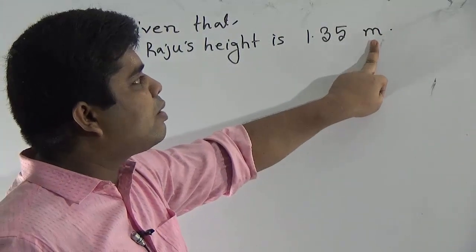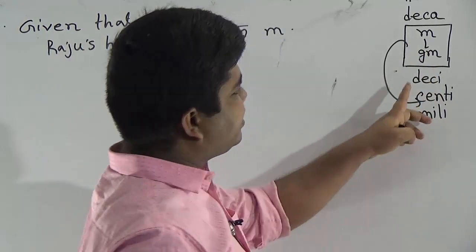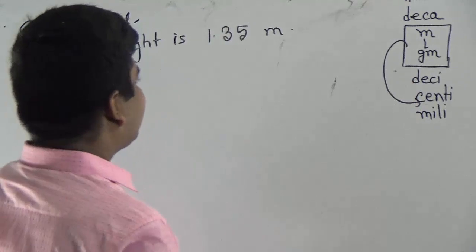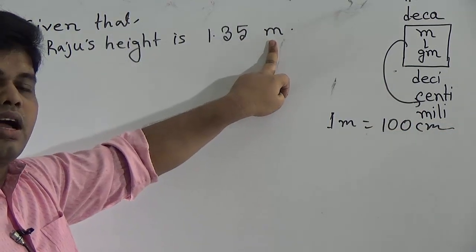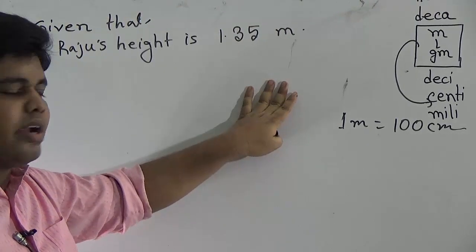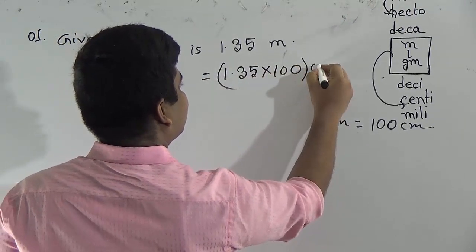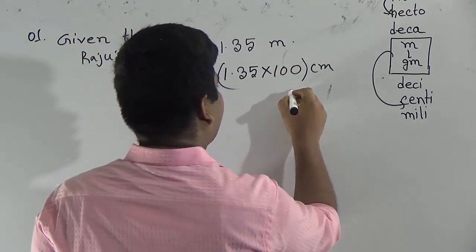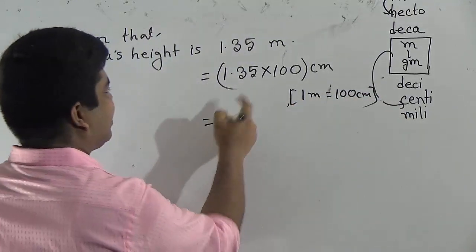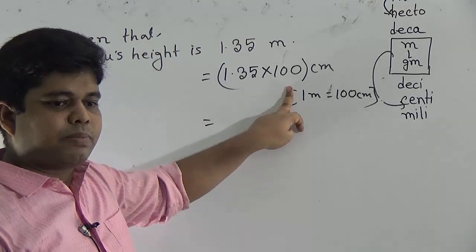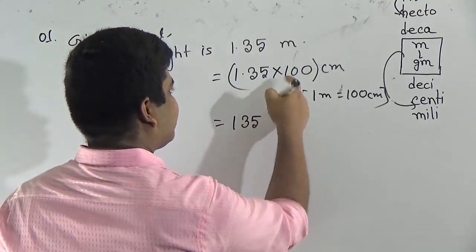Please notice: 1 meter equals how many centimeters? We go from meter to centimeter — that is two steps. For this reason, 1 meter equals 100 centimeters. To convert 1.35 meters into centimeters, we multiply 1.35 by 100. So 1.35 × 100 = 135 centimeters. After the decimal point there are two digits, so we place the point accordingly. Raju's height is 135 centimeters.